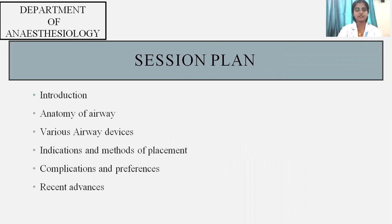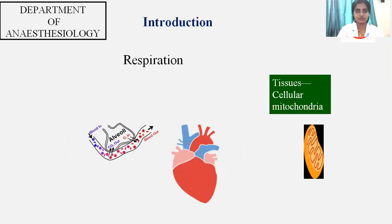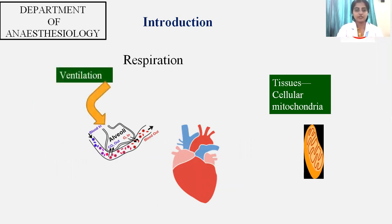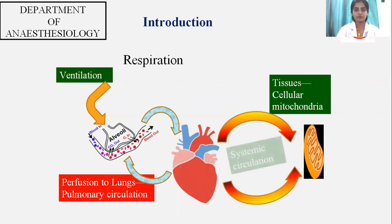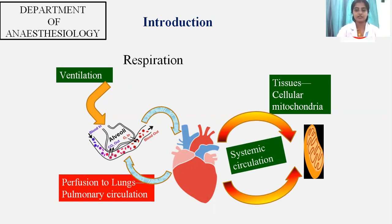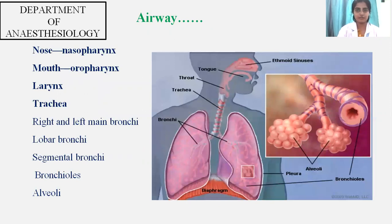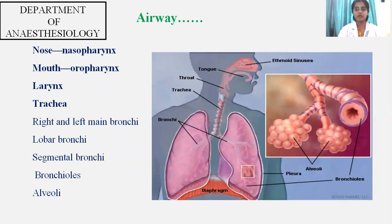What is respiration? When you inhale, the ventilation process takes place — air goes into the alveoli from where gas exchange takes place. After exchange, there is diffusion to the lungs via pulmonary circulation, then systemic circulation takes place through which the cellular mitochondria get the necessary products. The airway, from top to bottom, includes the nose, nasopharynx, mouth, oropharynx, then the larynx, trachea, right and left main bronchi, lobar bronchi, segmental bronchi, and the alveoli.